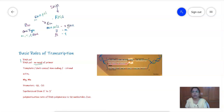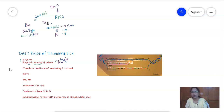RNA polymerase does not need a primer. A primer is necessary in the process of replication — it is a short oligonucleotide fragment which contains a free 3' hydroxyl group. However, this free 3' hydroxyl group is not necessary for the process of transcription.